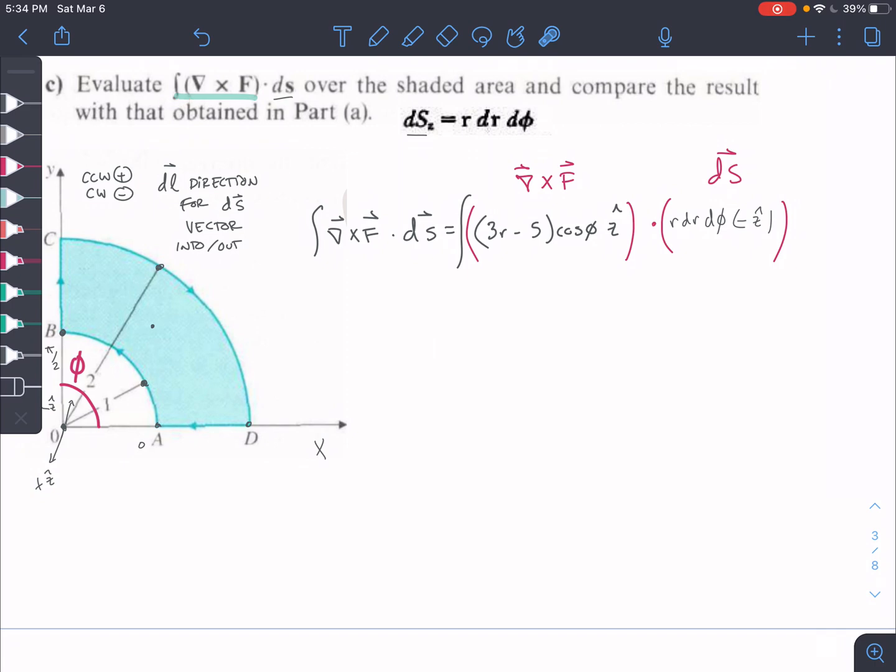So our ds is the differential surface, this flat surface, the shaded area, and our ds vector is always perpendicular to the surface. So we have this one lying in a flat 2D plane, so our ds surface vector is going to be in the z direction.